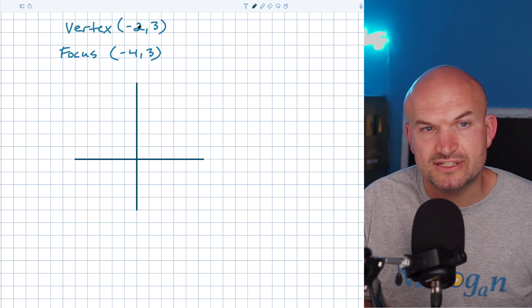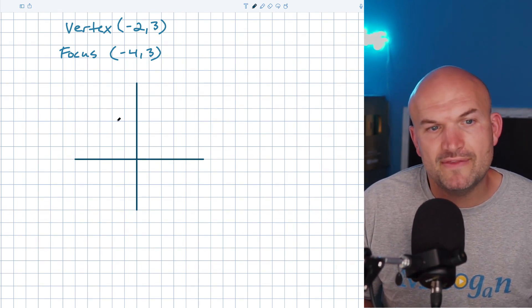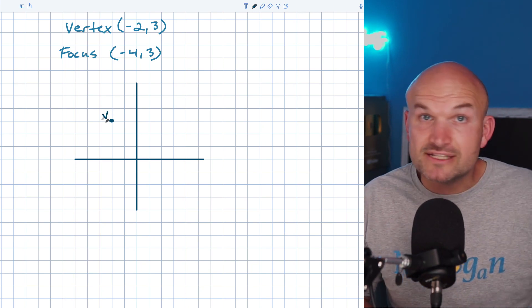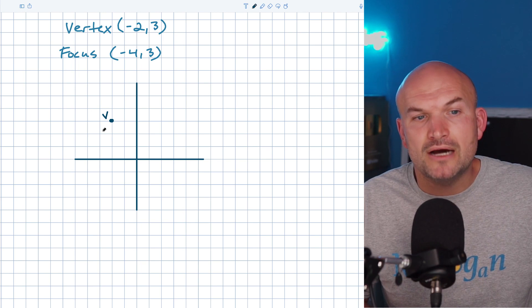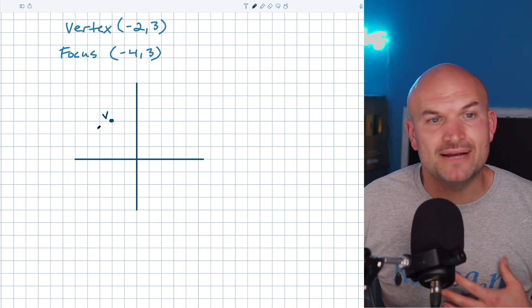So if I was going to graph the vertex here, it's going to be a point at negative two, up three. So go to the left negative two, and then go up three. And then I like to put a V right next to it, so I understand that is the vertex. That's the highest or the lowest or most left or most right version of my parabola.